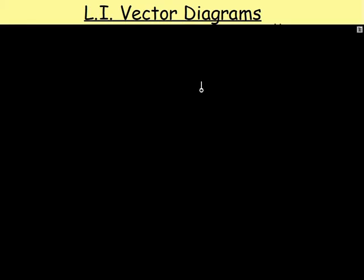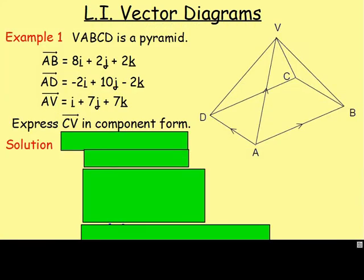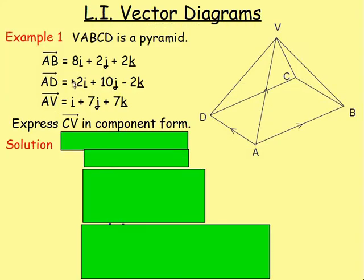Now if you remember back last year we were looking at alternative vector journeys in 2D. What we're going to do now is we're going to magically flip that to 3D. So let's look at this example.